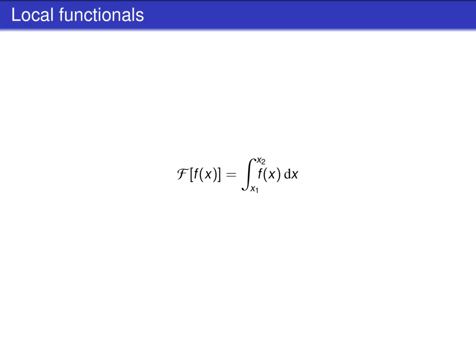An important special type of functionals are local functionals. A functional is called local if it can be written as an integral over a function. Here we integrate only over x. But, in principle, there can also be multiple variables.